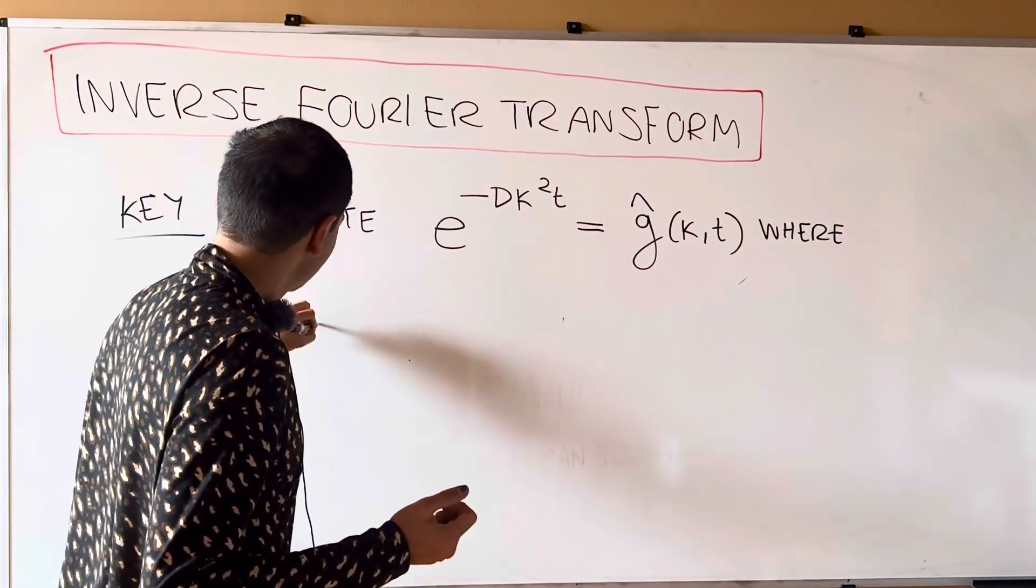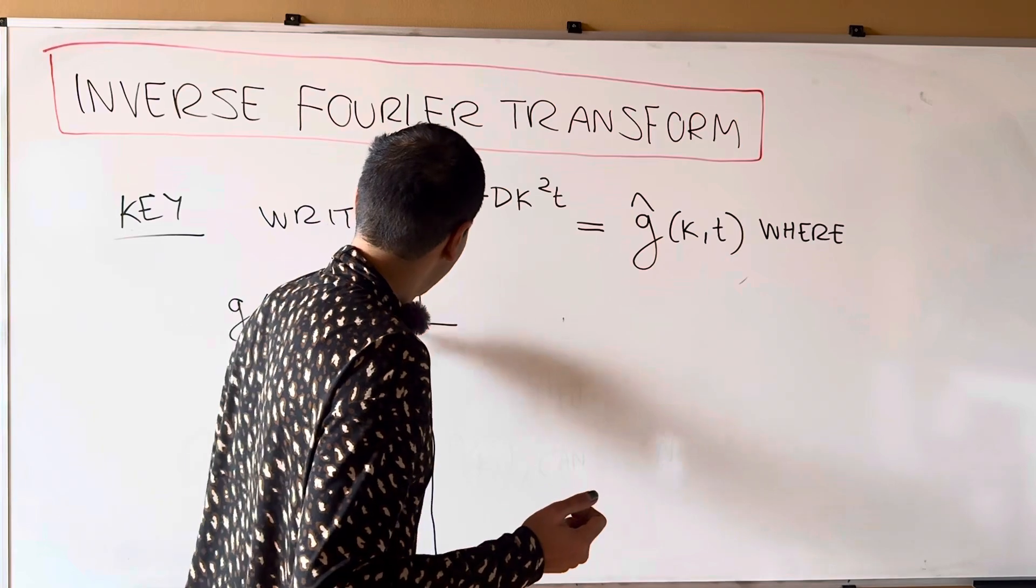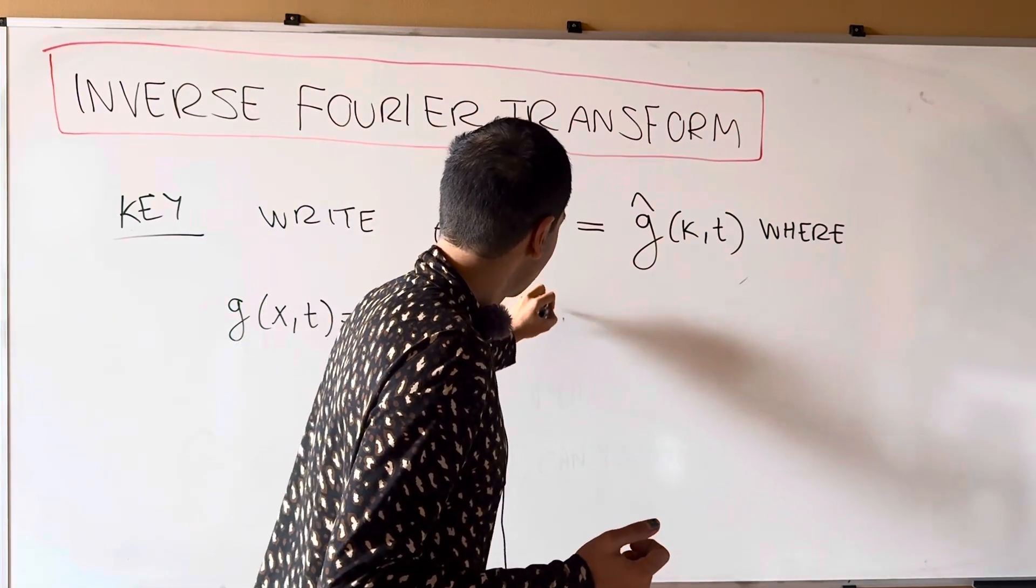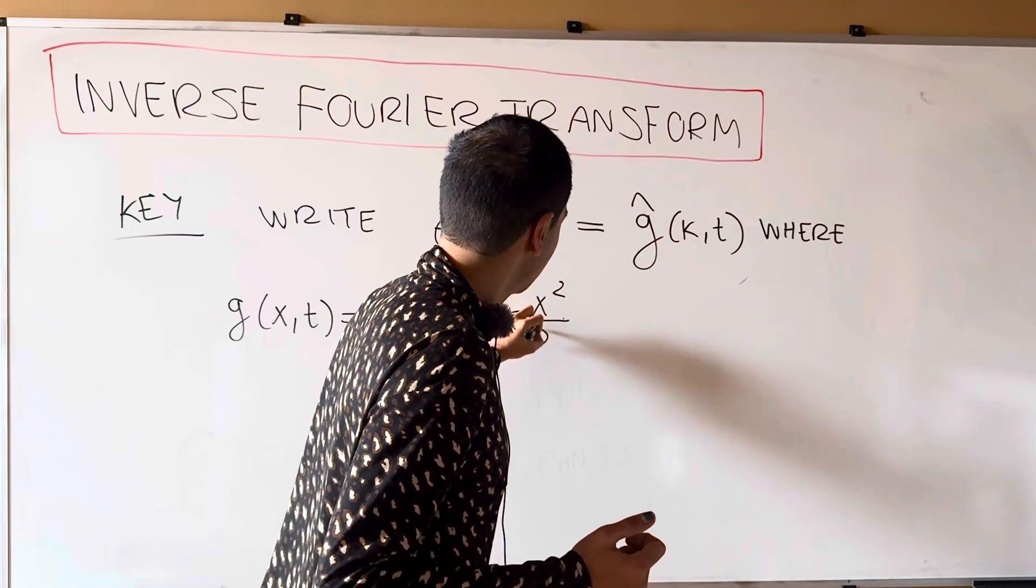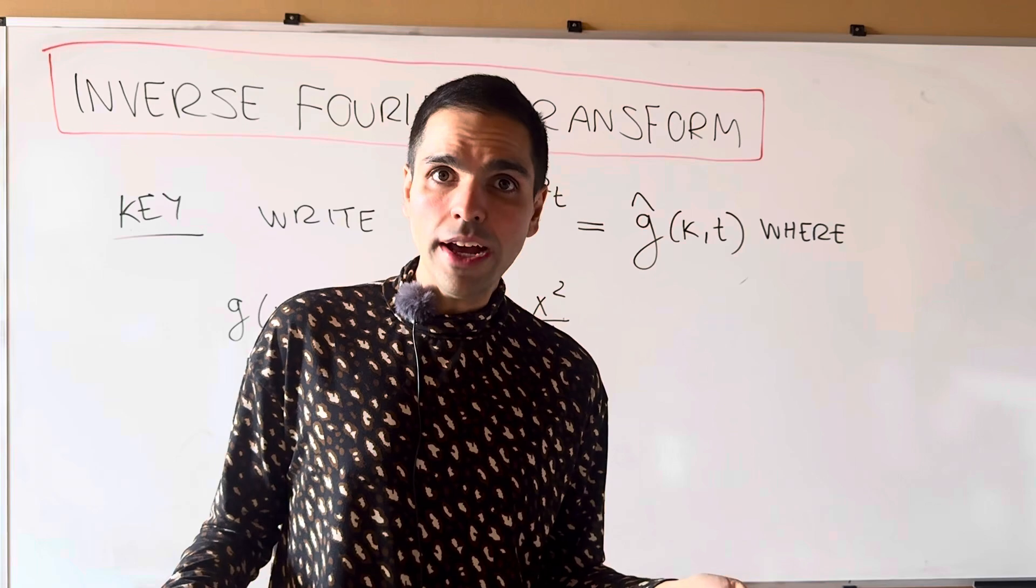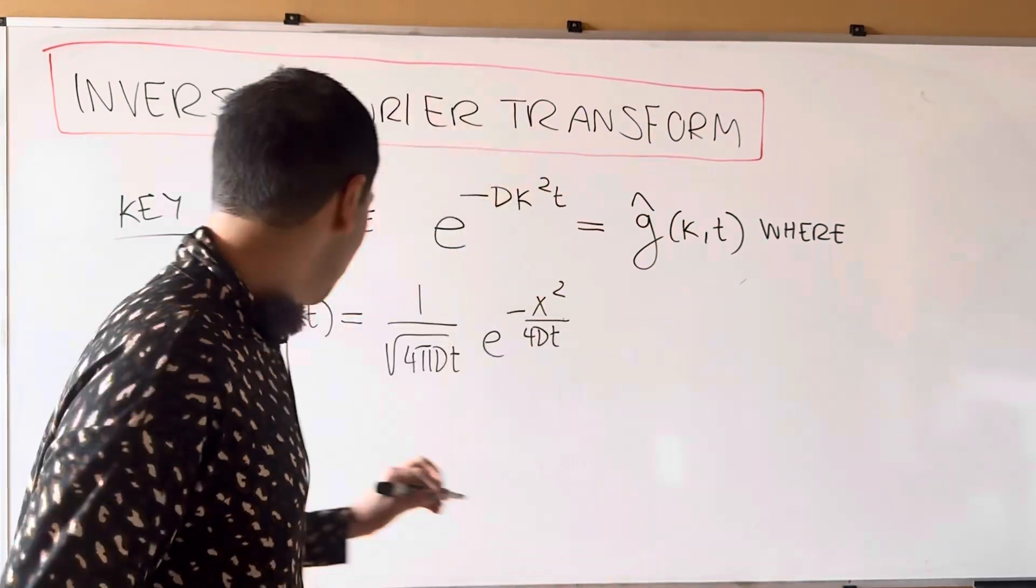So g of x t is one over square root four pi dt, e of minus x squared over four dt, which really raises the question, can you always do that?